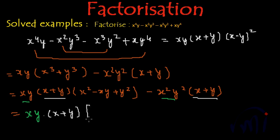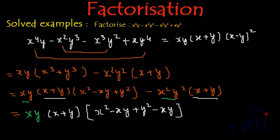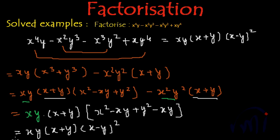Inside the bracket we have x squared minus xy plus y squared, and here we will be left with minus xy. So this minus xy and minus xy gives us minus 2xy, and this becomes x minus y whole square. So this can be written as xy multiplied by x plus y multiplied by x minus y whole square. Again we have got the same factors.